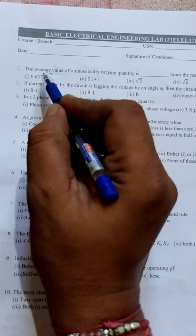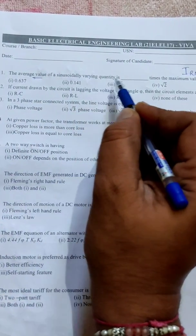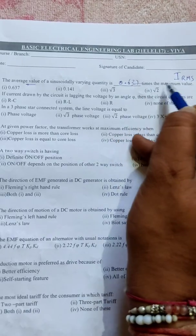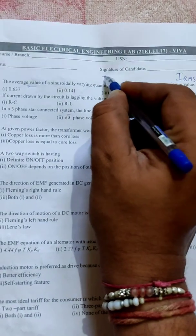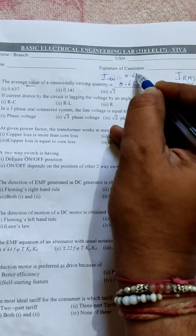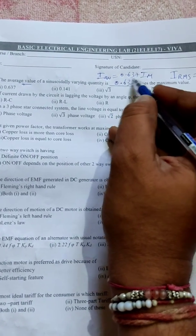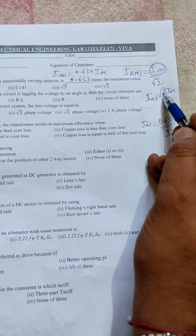Therefore the average value is 0.637 times of maximum value. This is the formula: I average equals 0.637 times of maximum. How we got 0.637? Just dividing 2 by pi, that's it.